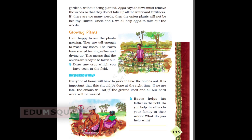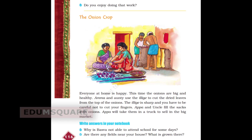Baswa helps his father in the fields. Do you help the elders in your family in their work? What do you help with? Do you enjoy doing this work? The onion crop — everyone at home is happy. This time the onions are big and healthy. Amma and auntie use the ilyeh to cut the dried leaves from the top of the onions — the ilyeh is sharp and you have to be careful not to cut your fingers. Appa and uncle fill the sacks with onions, and Appa will take them in a truck to sell in the big market.